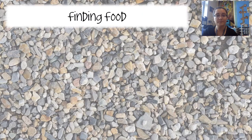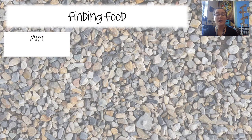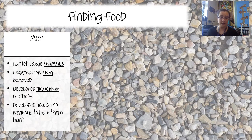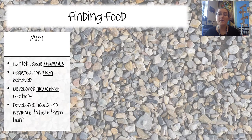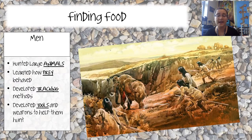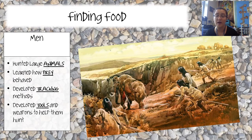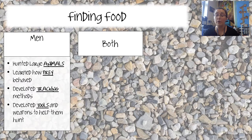Finding food was a job for everyone, but men and women had different roles. Men generally hunted large animals. Based on fossil records, men in the Paleolithic era were generally bigger and more muscular, giving them more physical strength. But hunting also required intelligence — learning how prey behaved, developing tracking methods, and creating tools and weapons. Hunting big animals like woolly mammoths required working together as a team.